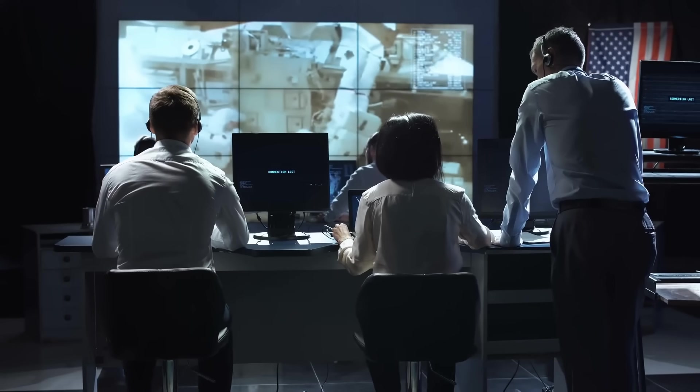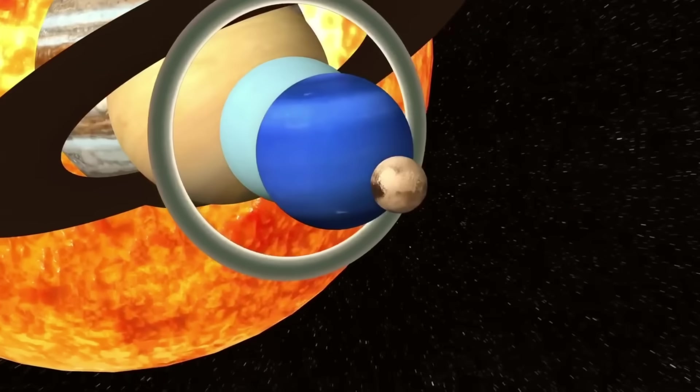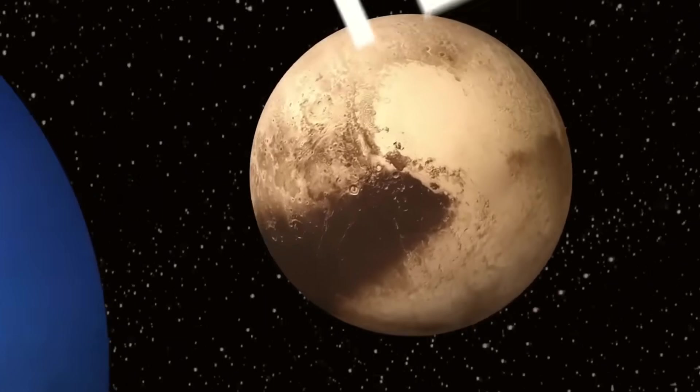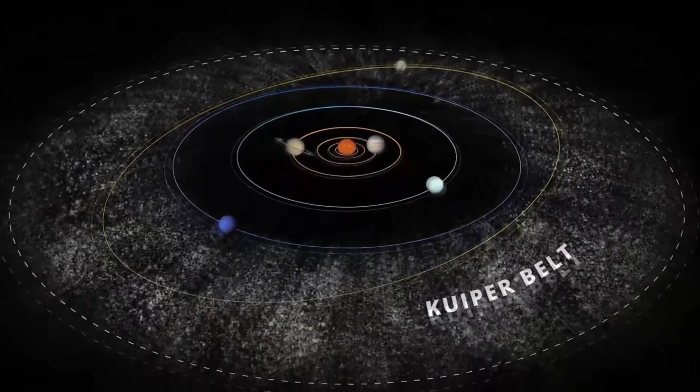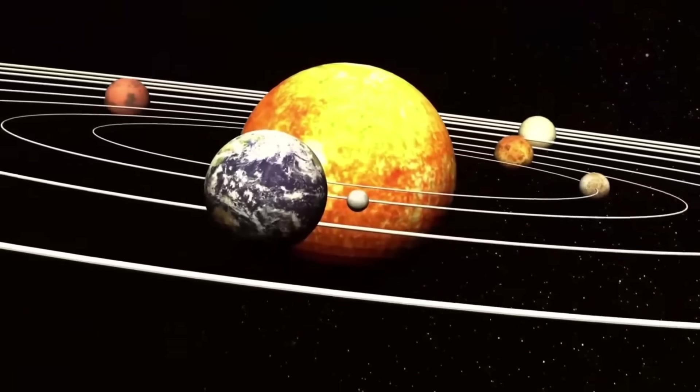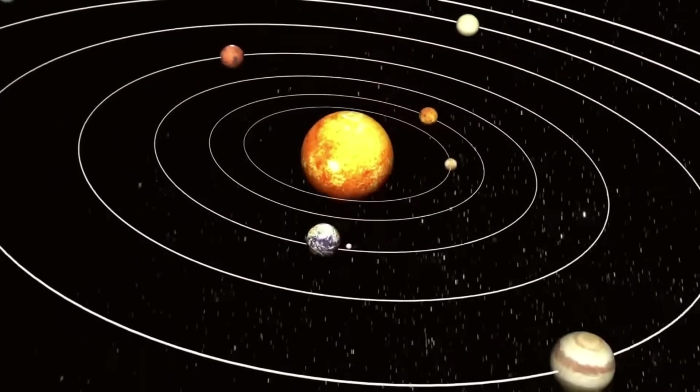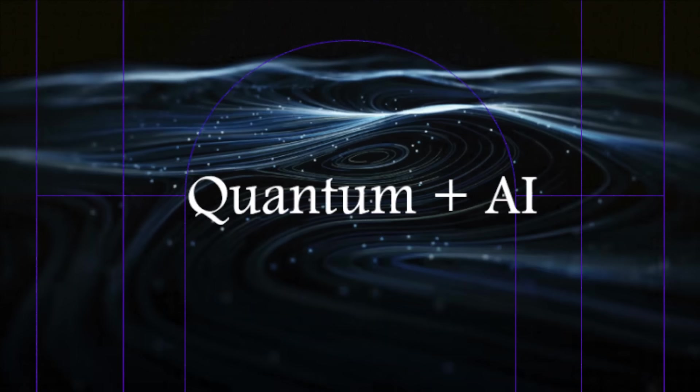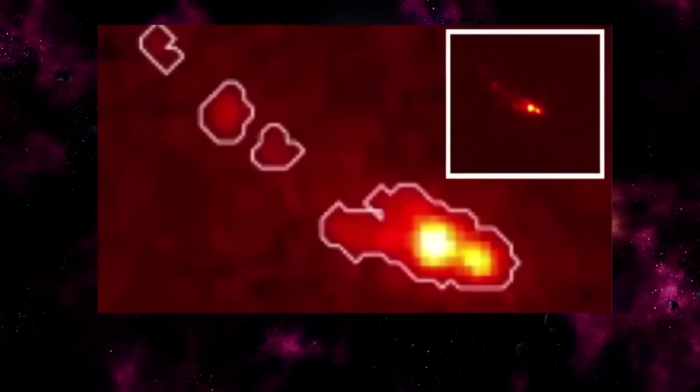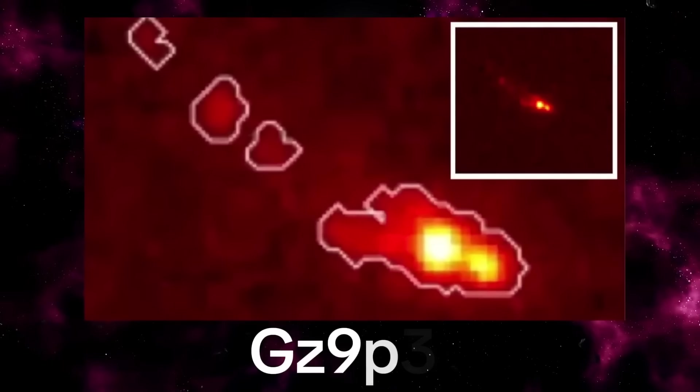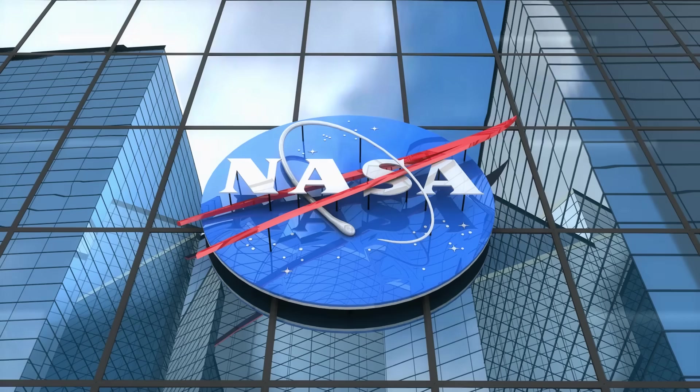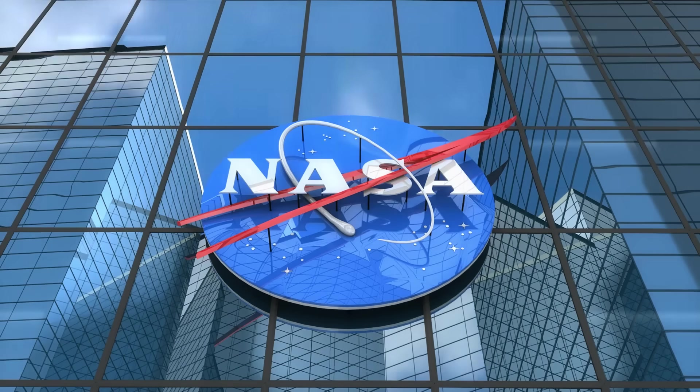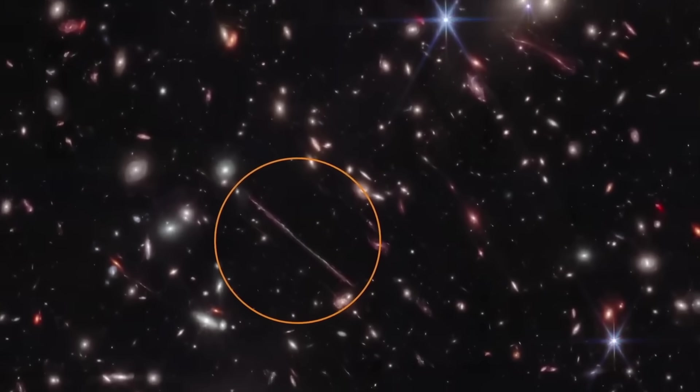For years, scientists have speculated about Planet 9, a massive unseen world influencing the orbits of distant Kuiper Belt objects. Today, that speculation might finally be turning into reality. A breakthrough quantum AI system processing deep-field scans from James Webb has isolated a series of gravitational anomalies and subtle infrared signatures that point to something big. NASA insiders are reportedly speechless, and the implications are nothing short of revolutionary.